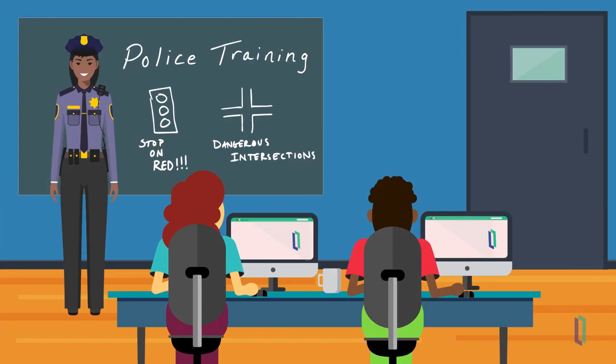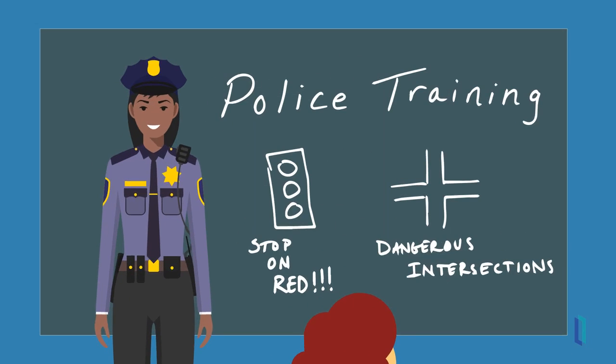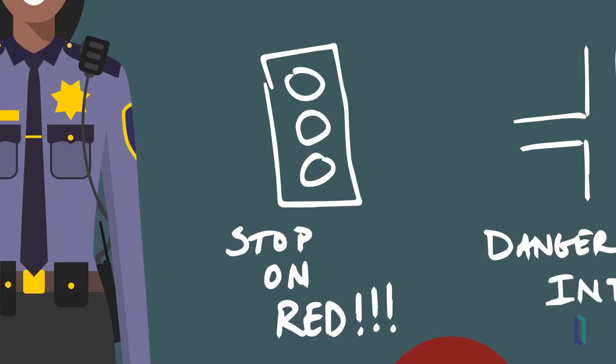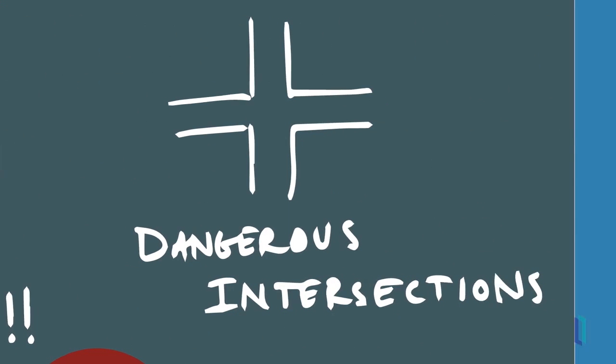Going back to our law enforcement example, this can help the police department build training programs to better educate the population on the impact of running red lights, or start projects to improve dangerous intersections.